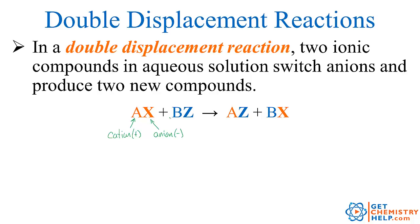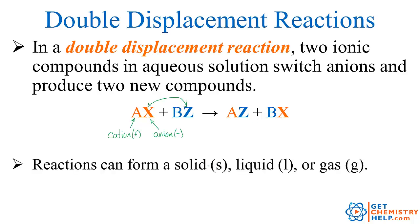What happens is, on the two ionic compounds, they just swap anions. So basically, A was partnered up with X, now it partners up with Z to make AZ. And B was partnered with Z, now it partners up with X to make BX. In order for this reaction to occur, there has to be some kind of driving force towards the products, so something is going to have to form — either a solid, a liquid, or a gas.